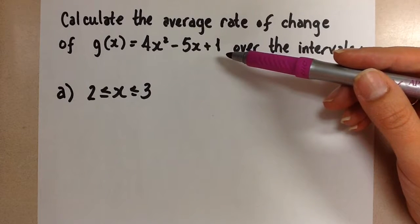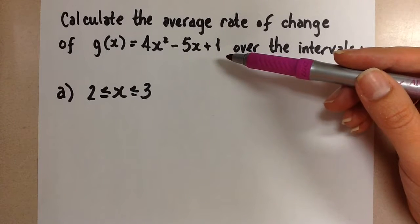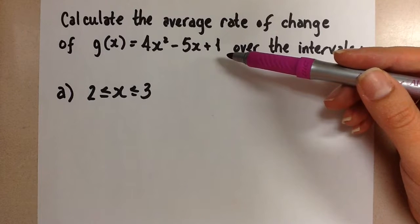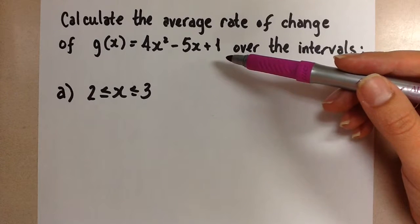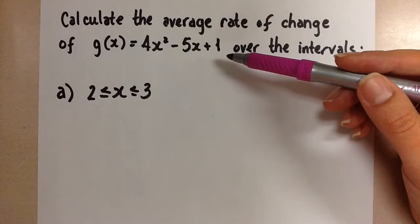If we were dealing with lines to find the average rate of change, we would just be finding the slope of that line, and at any given interval the slope would be the same. But with the curve we don't have straight lines, so it's not as simple as finding just the slope of the curve because we can't do that.